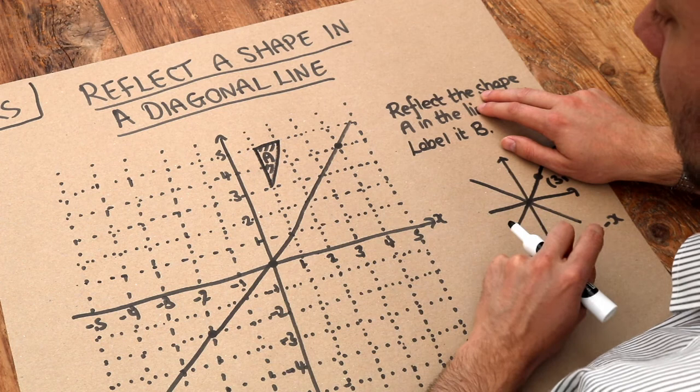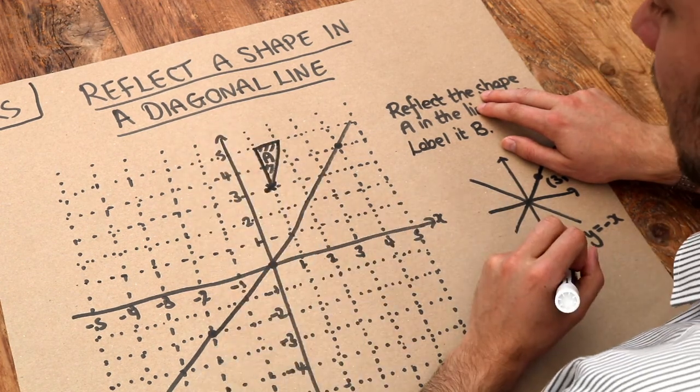Now to reflect the shape in that line, all we do is we take each point and we reflect each one in turn.